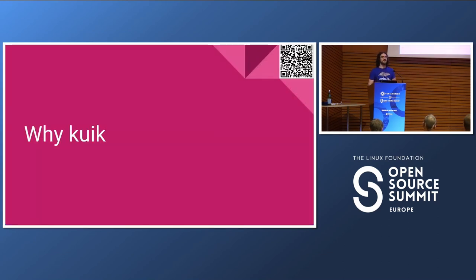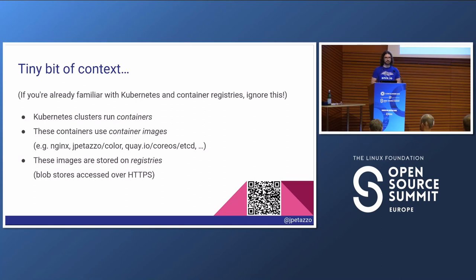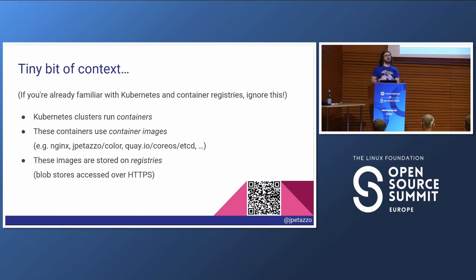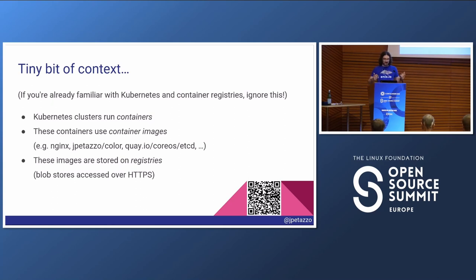Most of you raised your hands about using Kubernetes, so you probably know this problem well. Kubernetes clusters run containers - that's their whole point. Containers use container images, and before you can run a container you need to download the container image from what we call a registry. There's the Docker Hub, there is Quay, you can run your own registry. A registry is just an HTTP server serving blobs.